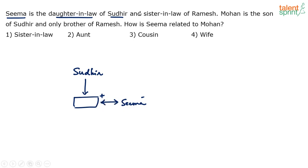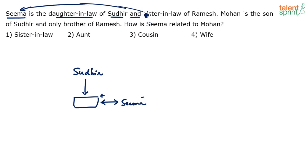And sister-in-law of Ramesh — when we say 'and', we always refer back to the first person, Sima. So basically it is saying that Sima is the sister-in-law of Ramesh. Now there are two possibilities — strictly speaking, sister-in-law, as we discussed in the blood relations video, are of two types.